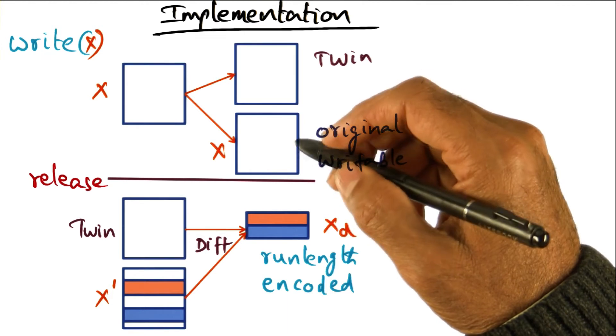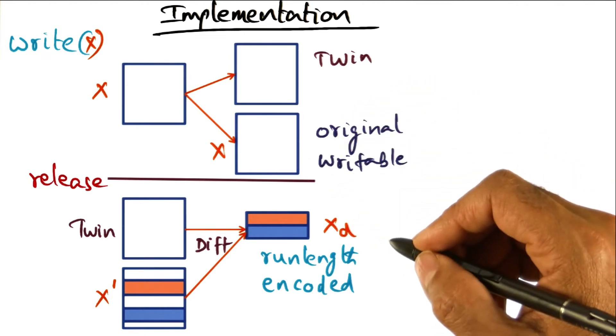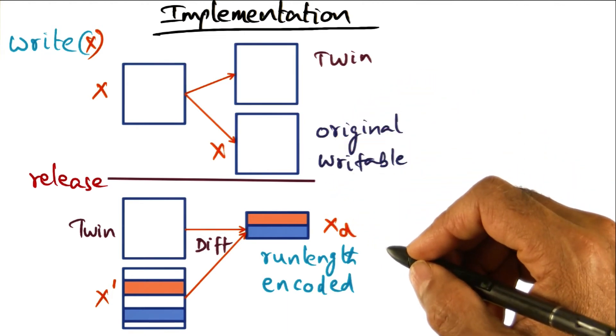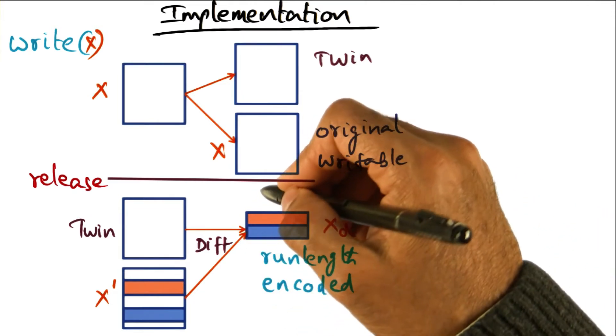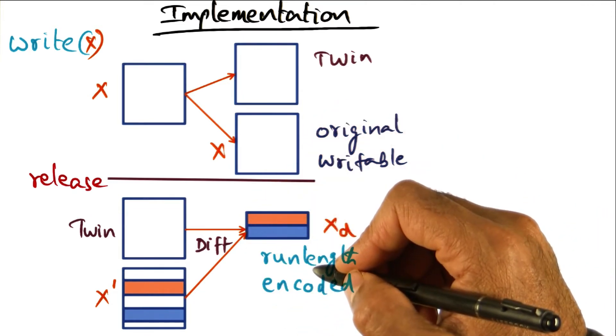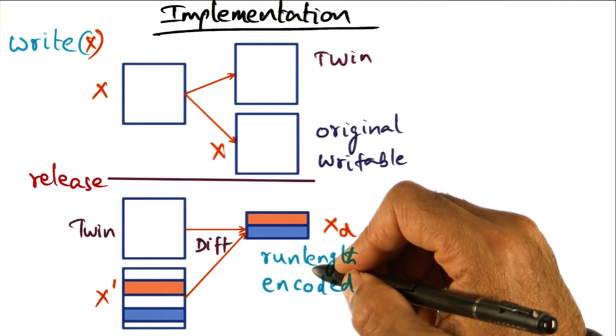And when that processor has a page fault for page X, the DSM software knows that, oh, there is a diff lying around on this node, which is needed in order to update the page and give it to the current lock acquirer.